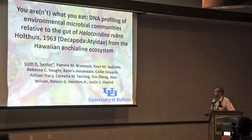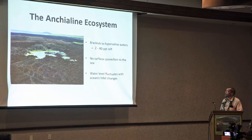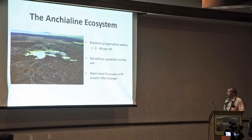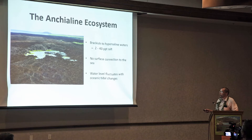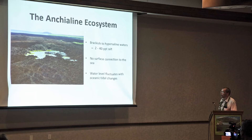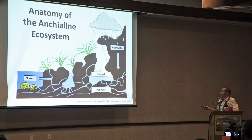There are lots of different authors who have contributed to this information over time. When we look at the anchialine Hawaiian ecosystem — or the anchialine ecosystem in Hawaii and elsewhere — what we see is that you've got these landlocked bodies of water that are brackish to hypersaline, ranging from 2 to 40 parts per thousand salt. While they have no surface connection to the sea, they fluctuate with the tides due to oceanic tidal changes occurring underground, pushing water up and down through this ecological space.